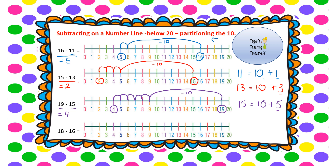Very last question: 18 take away 16. Find 18 on the number line. Partition 16 into a 10 and a 6. Jump back 10 places from 18, which takes us to 8. Now jump back 6 more spaces: 1, 2, 3, 4, 5, 6. I've landed on 2, so 18 take away 16 equals 2.